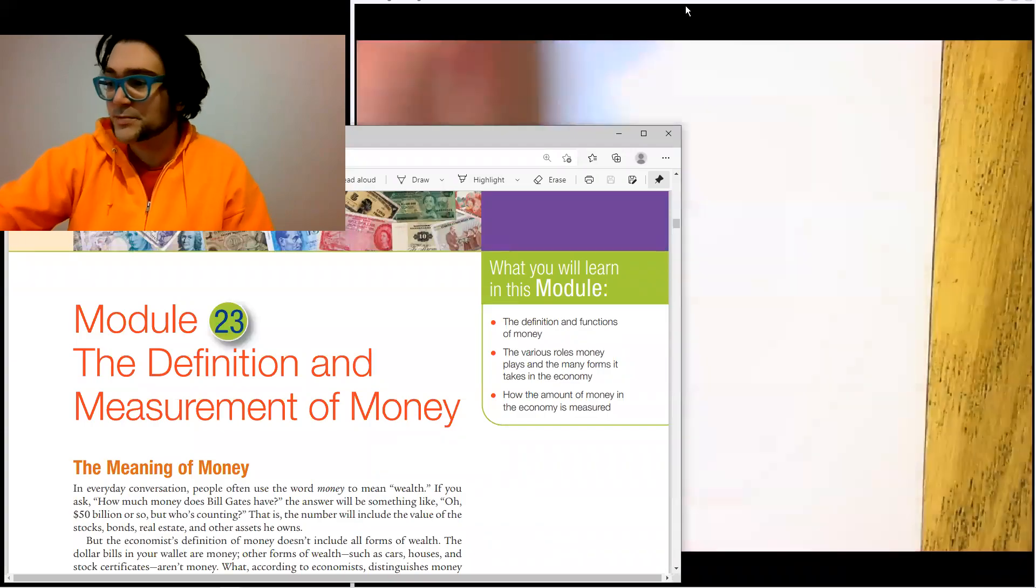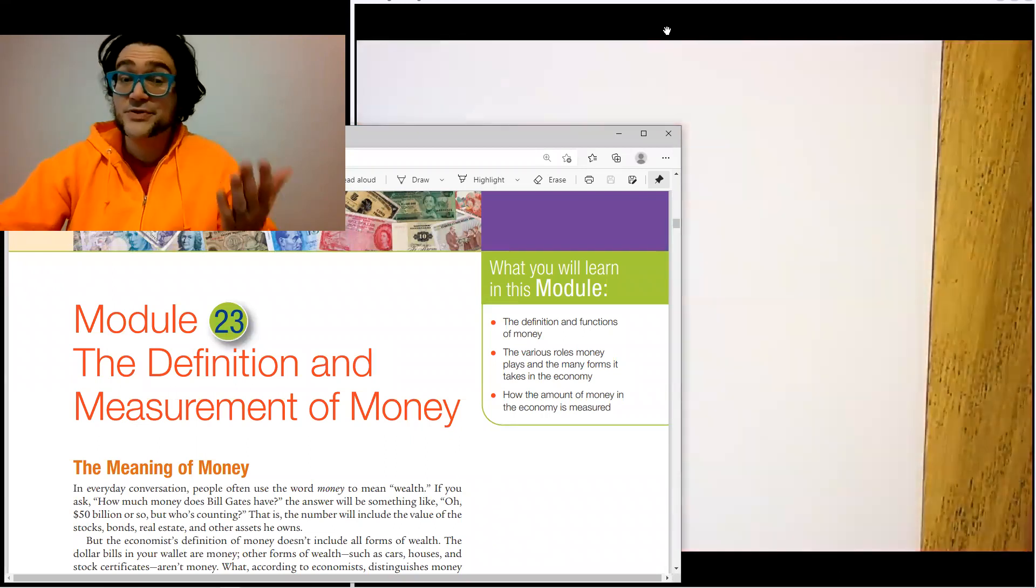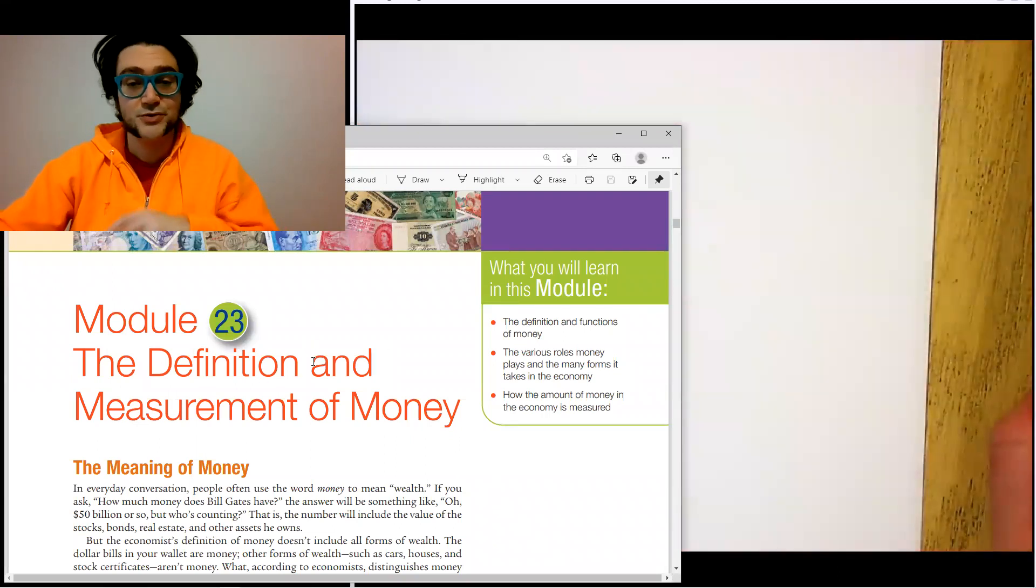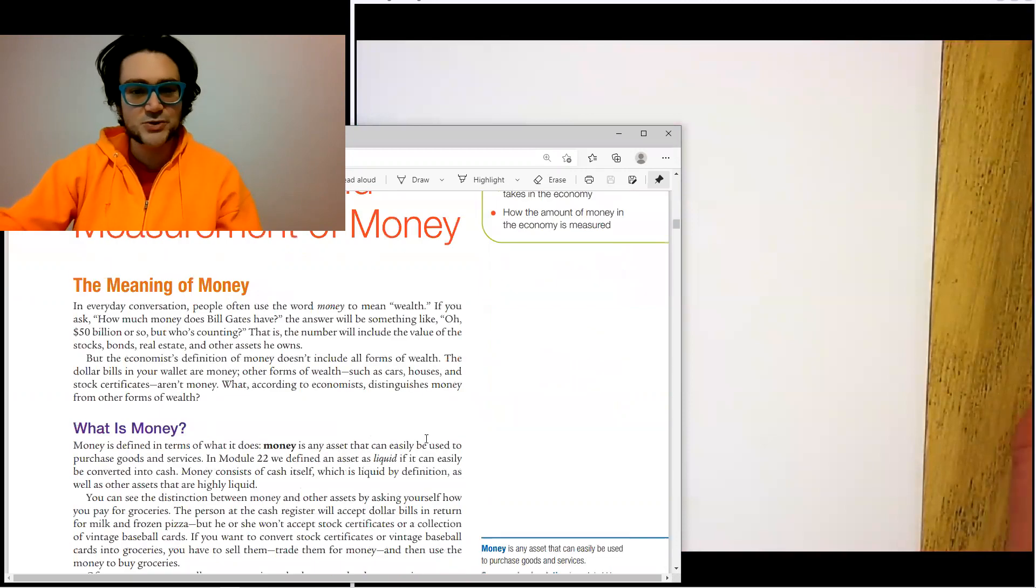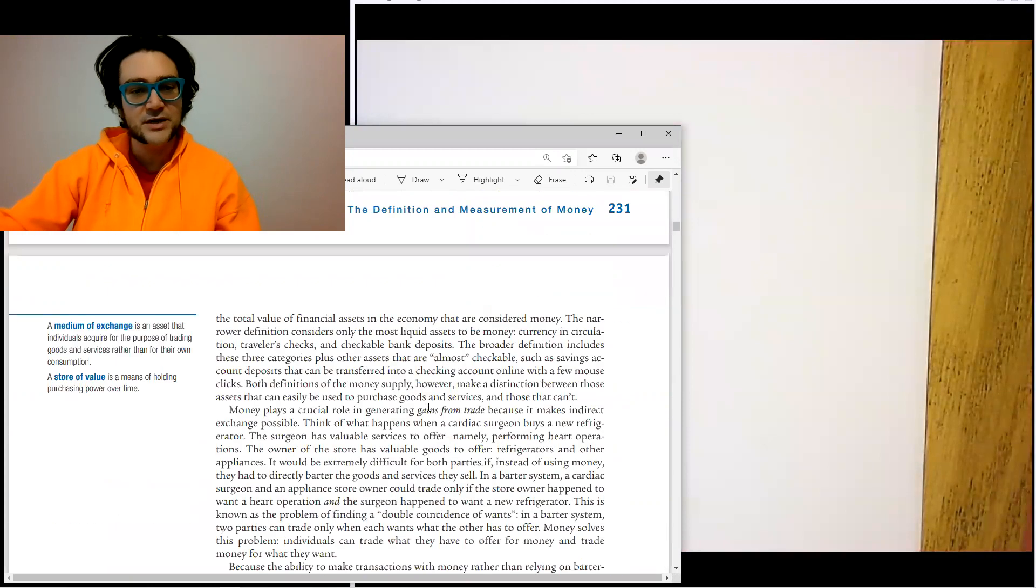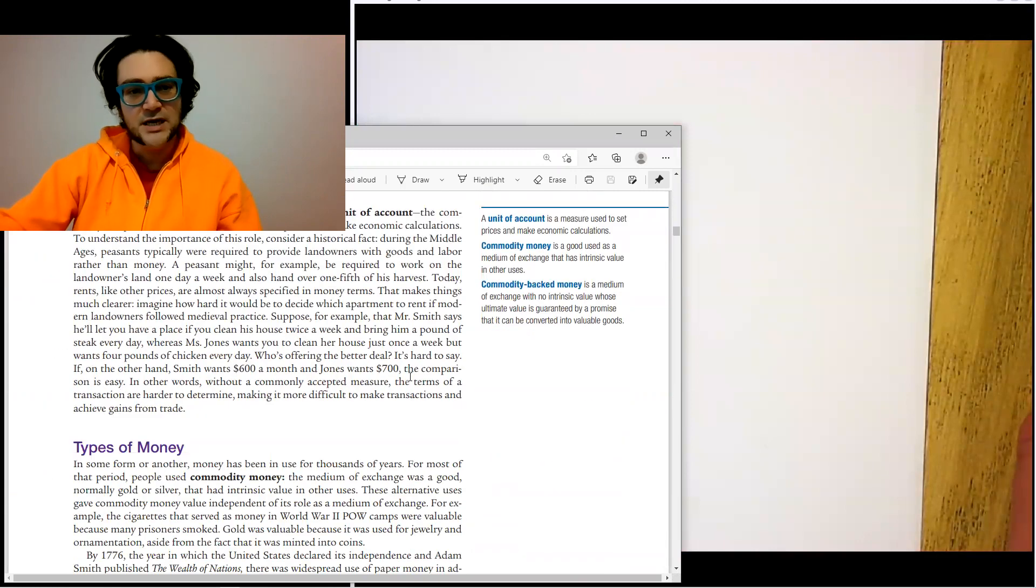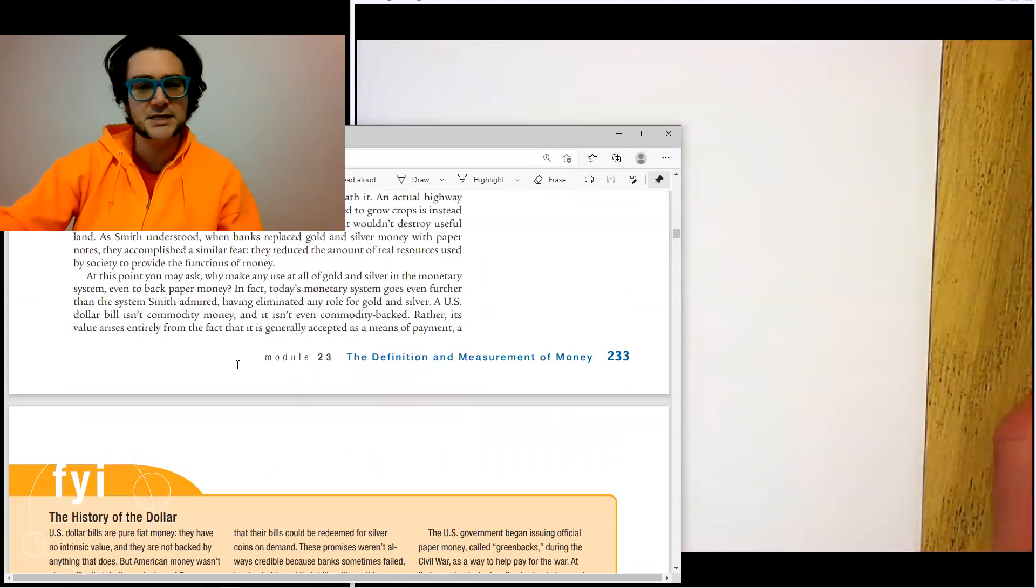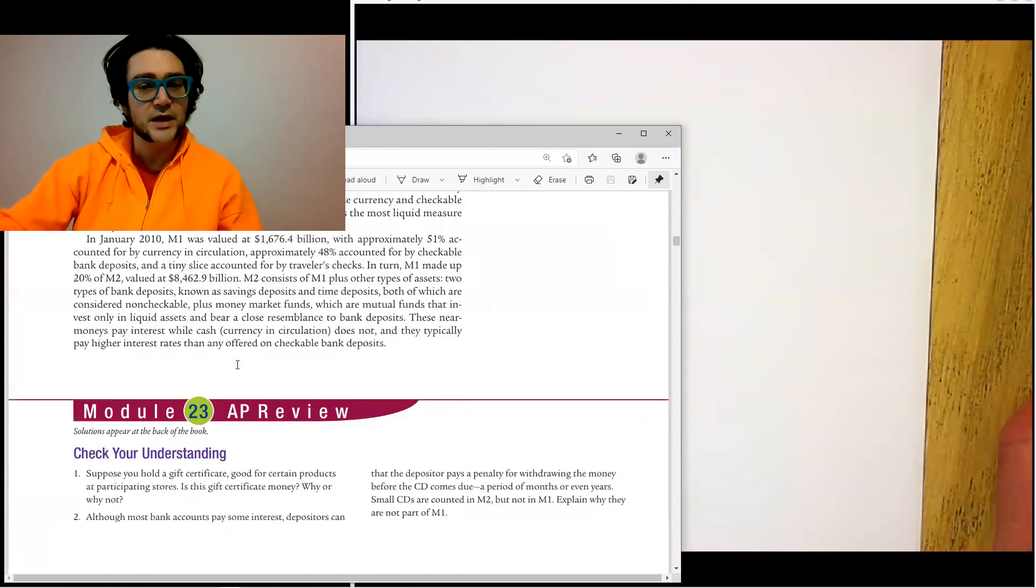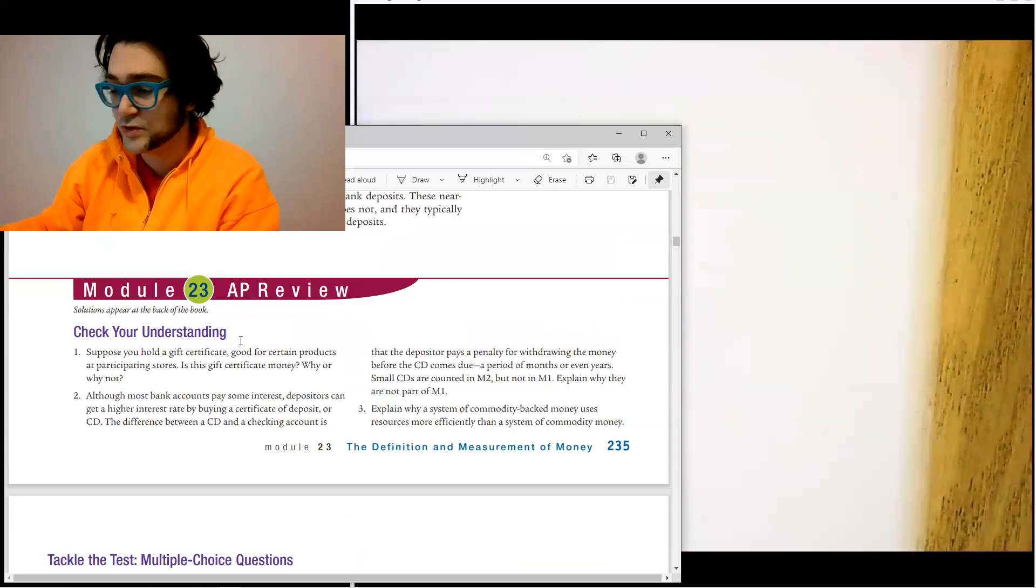Well, hello there. So in this video, we're going to be taking a look at money. Now, like with the previous video, I really do encourage you to read this module. There's some really interesting facts in it. There's cool stuff in here about the history of money and where it's come from, the different roles of it. So particularly this part about commodity money is really interesting. All right, let's get started with module 23.